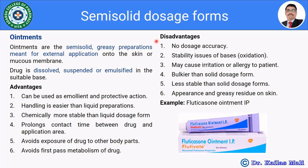Disadvantages of ointments: there is no dose accuracy, and there are stability issues with the bases, such as oxidation of certain bases. They may cause irritation or allergy to the patient. They are bulkier than solid dosage forms, less stable than solid dosage forms, and leave a greasy residue on the skin. An example is fluticasone ointment IP.